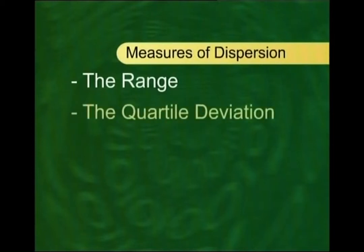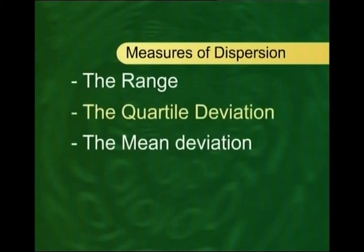Just as there were quite a few ways of measuring the central tendency of a dataset — the arithmetic mean, the geometric mean, the harmonic mean, the median, and the mode — similarly, we have different ways of measuring the spread of our distribution. I will discuss four basic and important measures of dispersion: the range, the quartile deviation, the mean deviation, and the most important and most widely used — the standard deviation.